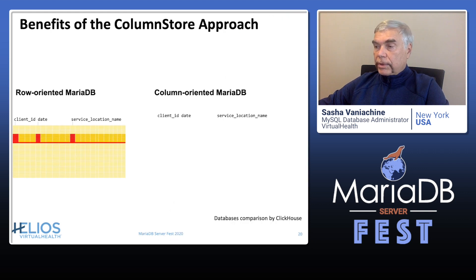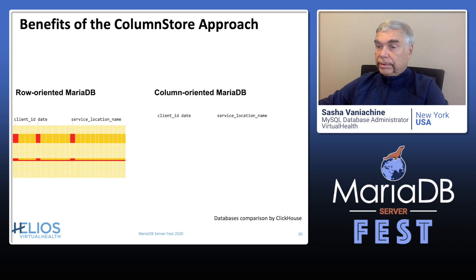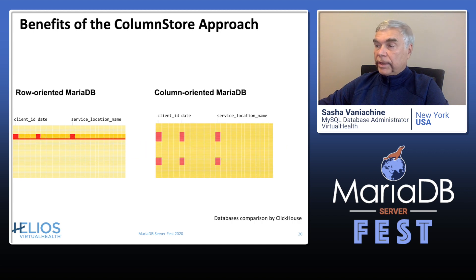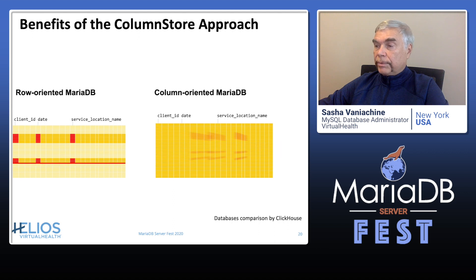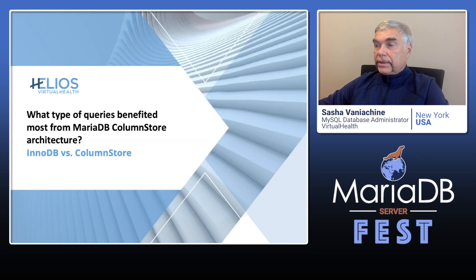In the case of our first ranking query, the row-oriented database has to read the whole row to get data for just three columns, as shown on this slide. In contrast, column-oriented databases read only the data from the three columns involved in the query. Let me present the results of our comparison of InnoDB versus ColumnStore.